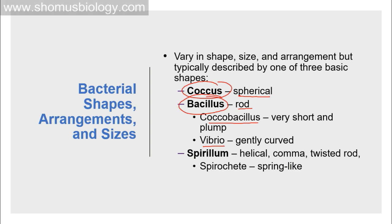Vibrio is actually a type of bacillus that is slightly curved — so if bacillus is straight, vibrio bends slightly. A coccobacillus is also a bacillus but a little roundish, while a coccus is totally fully round-shaped. These are the most common basic shapes of bacteria.